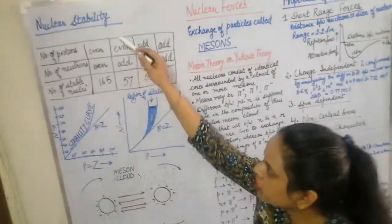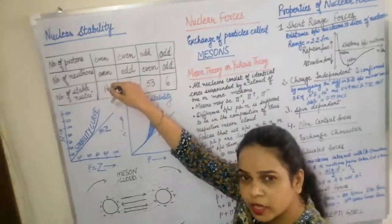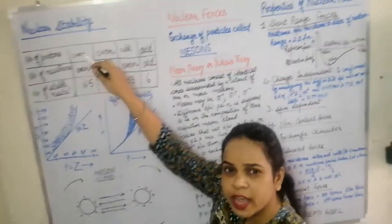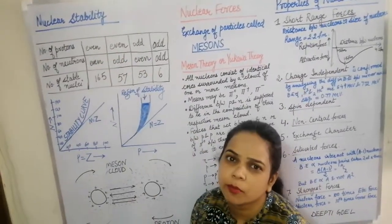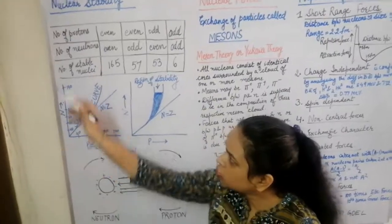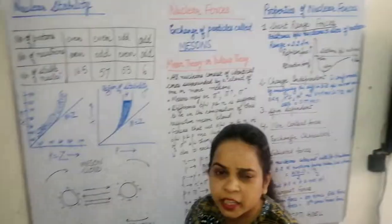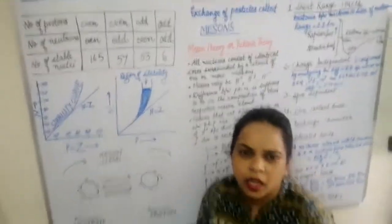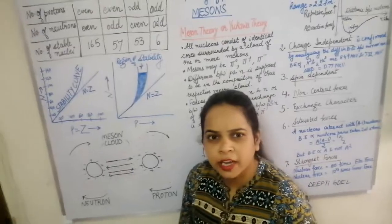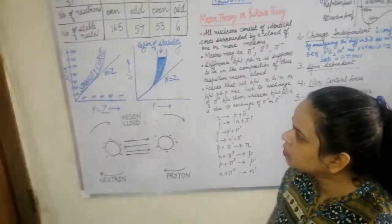For stable nuclei, generally those nuclei are stable which have an even number of protons and an even number of neutrons. The total stable nuclei found are 281 out of 900 nuclei.